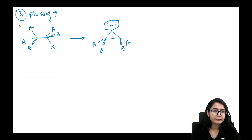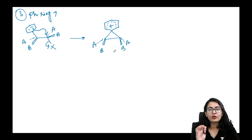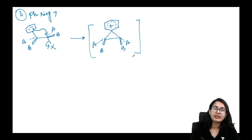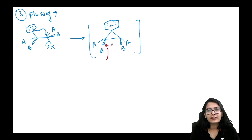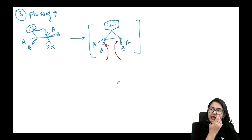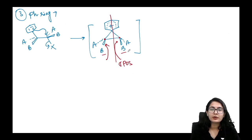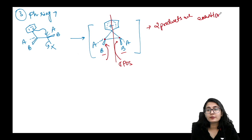In the phenonium ion intermediate, the nucleophile — such as acetate — can open the three-membered ring from two possible sites. When both substituents are on the same side, the intermediate has a sigma plane of symmetry, and the two ring-opening products are enantiomers of each other.